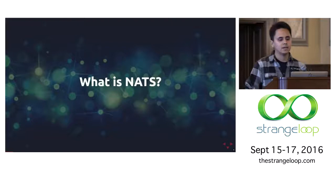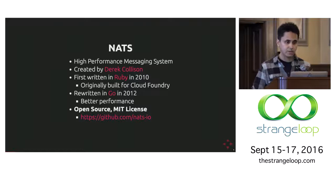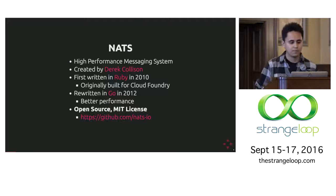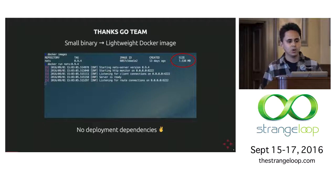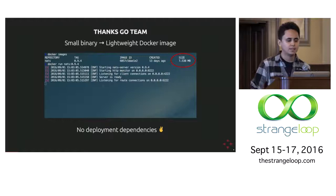What is NATS? NATS is a high-performance messaging system. It was created by Derek Collison originally in 2010 for Cloud Foundry. It was first written in Ruby with Event Machine, then there was a rewrite in Go in 2012, which gave it many performance benefits. It is open source under the MIT license, and you can find it on GitHub under the NATS-IO organization. It's a very small binary, thanks to the Go team and the design decisions there.